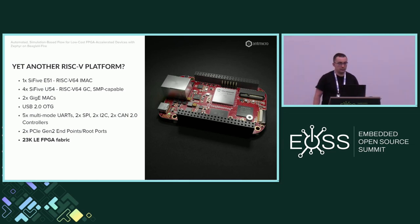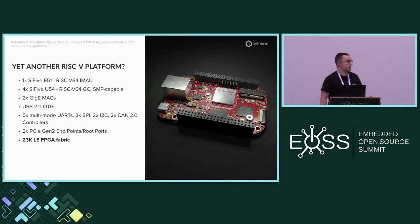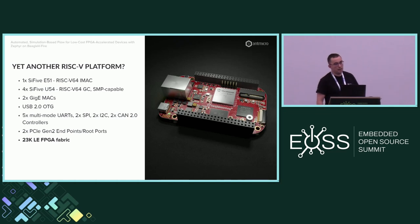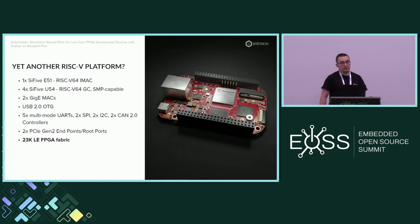We now have quite a few RISC-V platforms available on the market. What makes BeagleFire special? It has five 64-bit cores with fairly standard instruction set support, Ethernet, USB, and various different connectivity options. But the FPGA fabric is the thing that makes it stand out, giving you the possibility of expanding the capabilities to various different areas.